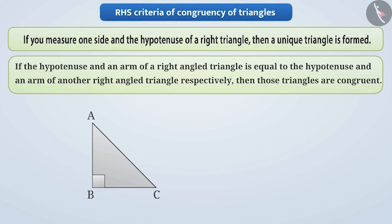If under a congruence the hypotenuse and one arm of a right angled triangle are equal to the hypotenuse and one arm of another right angled triangle respectively, then those triangles are congruent.